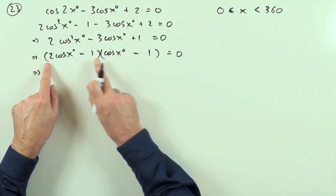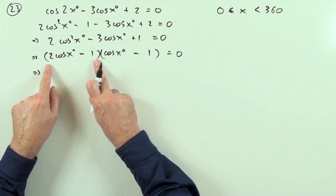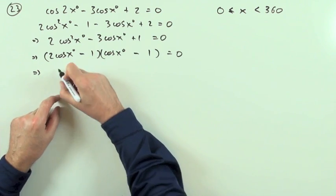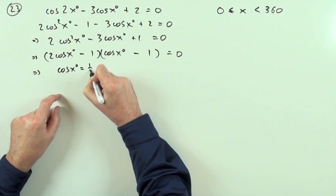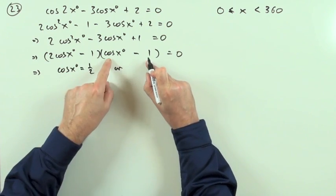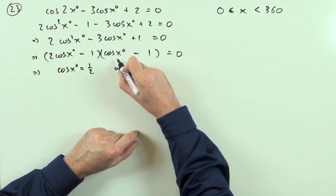From which I've got either this bracket equal to 0, so either cos x equals a half, or this bracket is equal to 0, so I get that little equation: cos x equals 1.